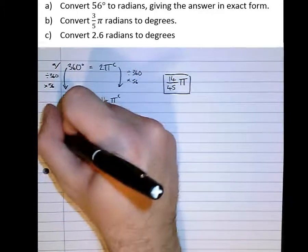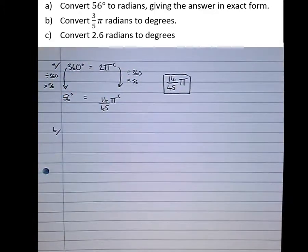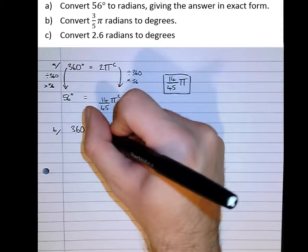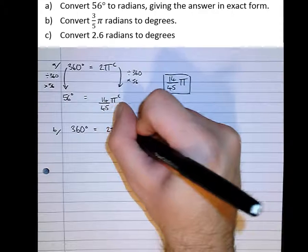Part B. Let's convert 3/5 π radians to degrees. Let's start off with our fact that we know to be true. 360 degrees is 2π radians.